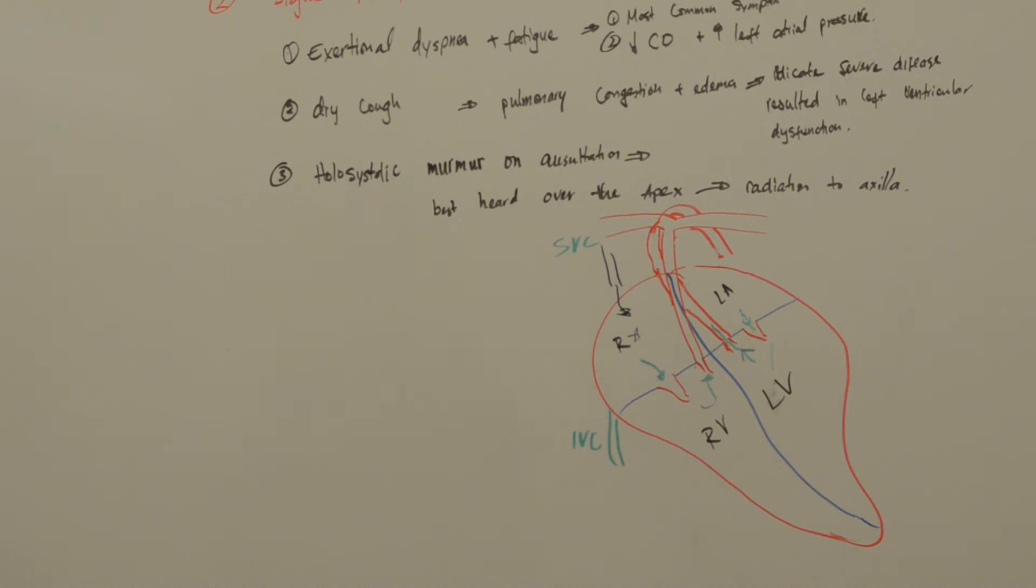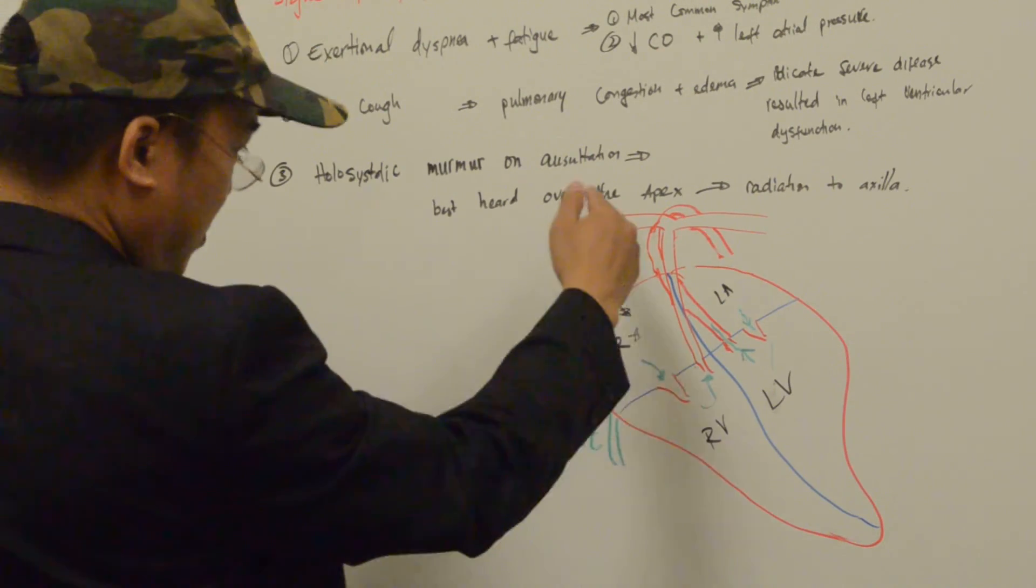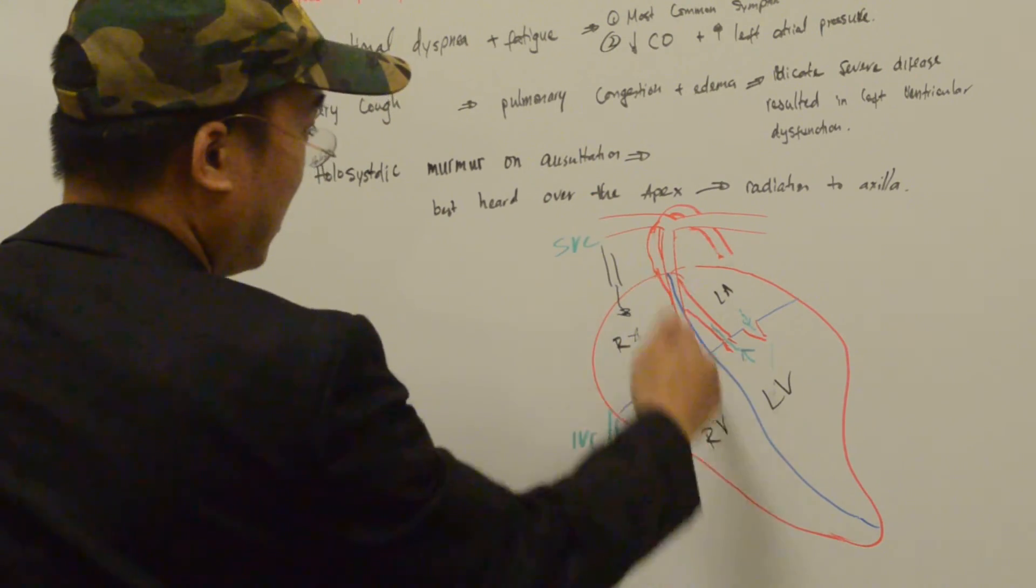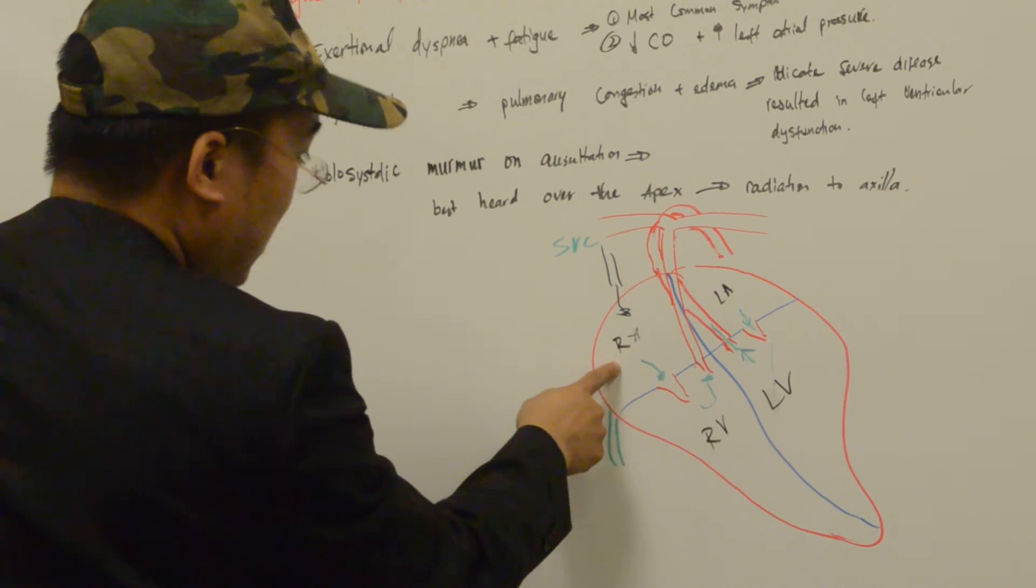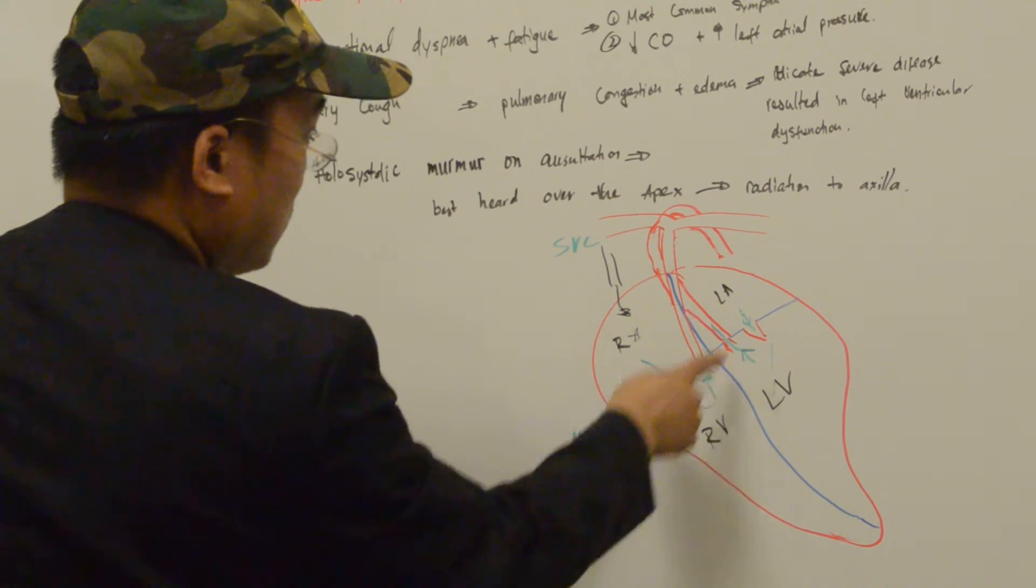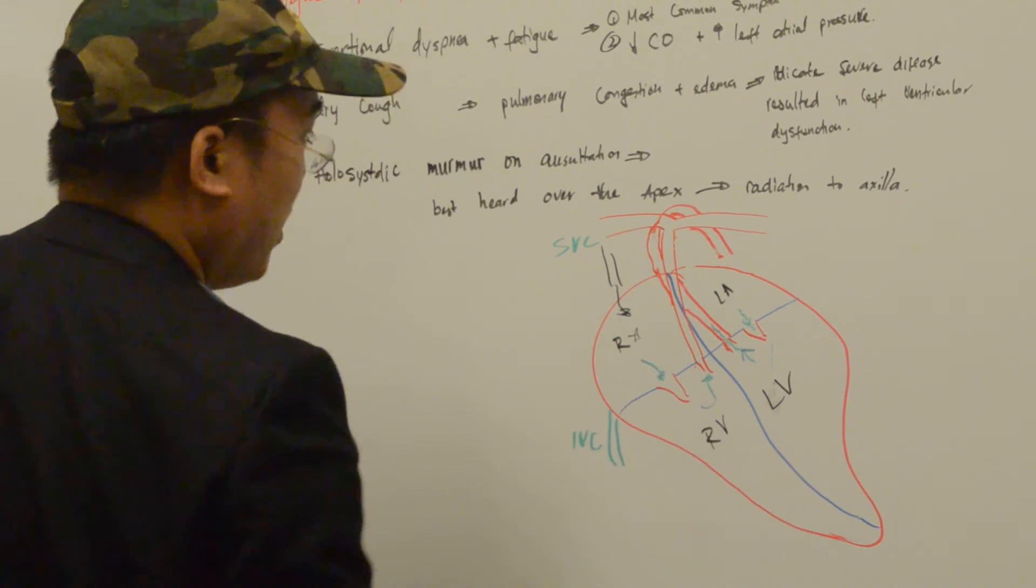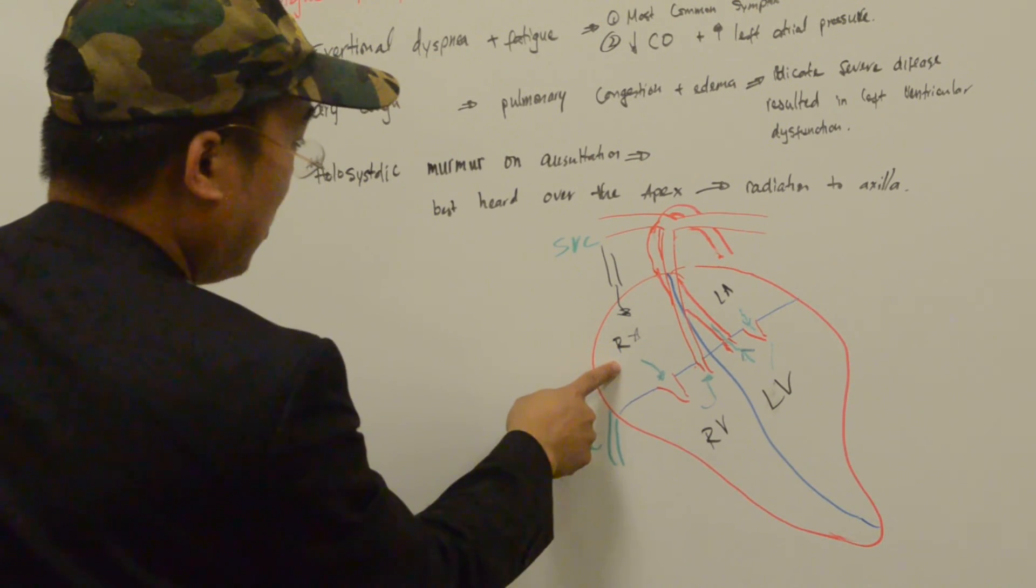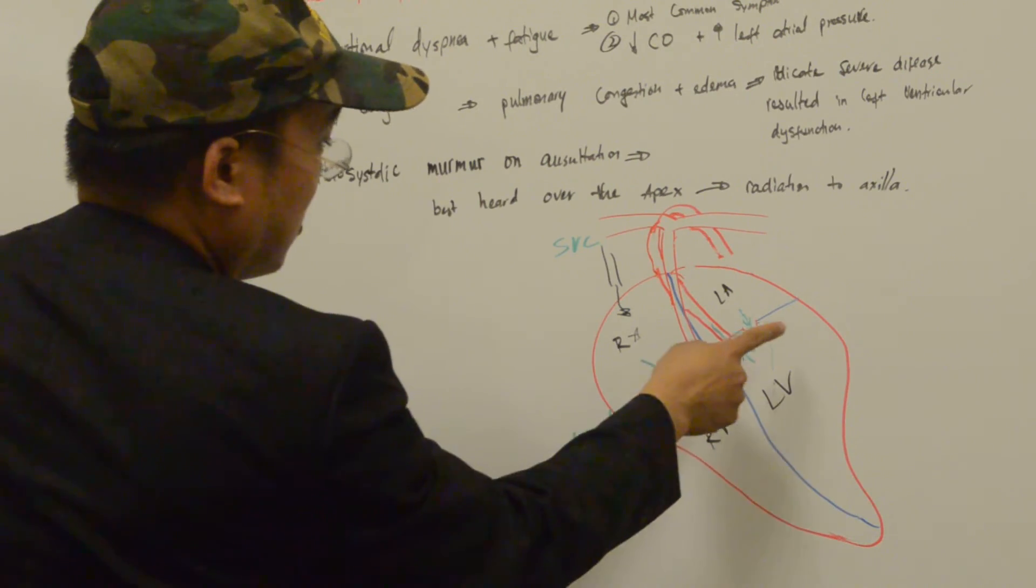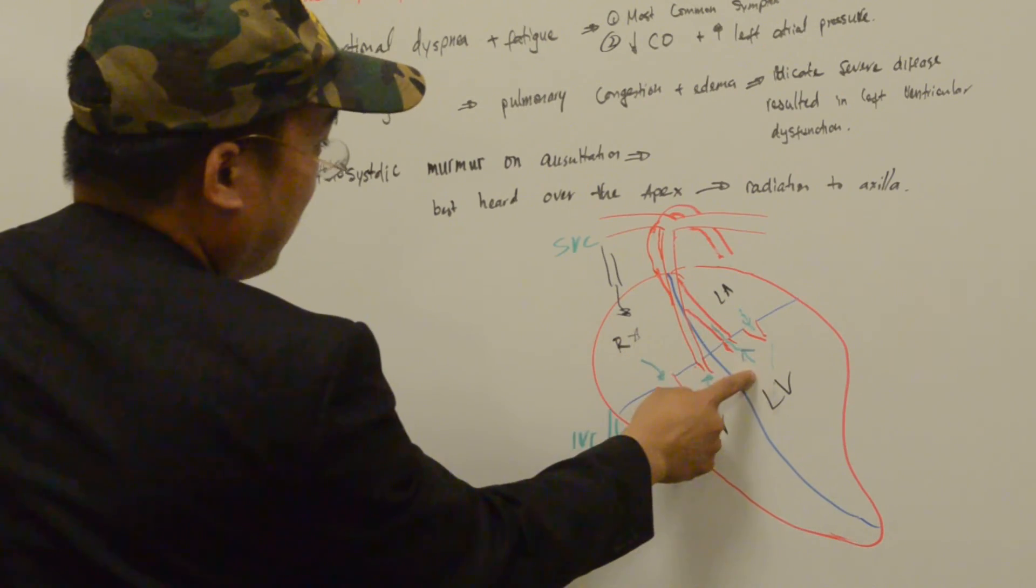The heart is divided into four chambers: the right side and the left side. The right side is divided into the right atrium and right ventricle. The left side is divided into the left atrium and left ventricle. The tricuspid valve is located between the right atrium and right ventricle, whereas the mitral valve is located between the left atrium and left ventricle.